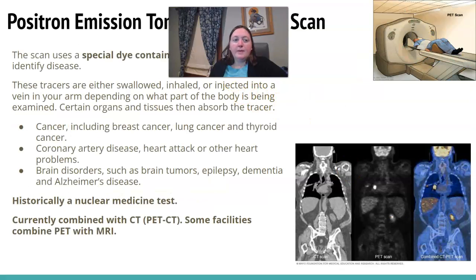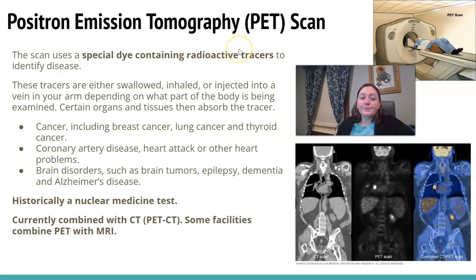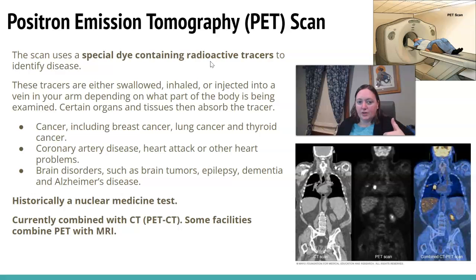The PET scan — positron emission tomography — is historically a nuclear medicine scan, but it's been combined with CT and most recently even with MRI. A special dye containing a radioactive tracer is injected or swallowed. The organs of interest absorb the tracer — mostly cancer areas, but it could also involve the heart, brain disorders, brain tumors, and other cancer areas.